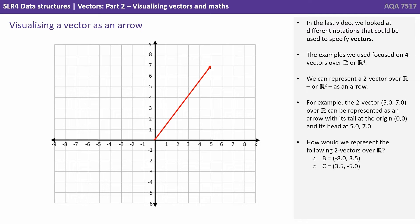How could we represent the following two vectors over R? We just again put the tail at (0, 0) and put the head where the vector coordinates are.